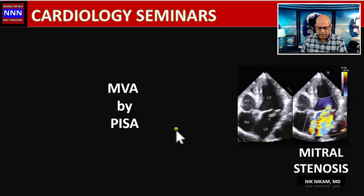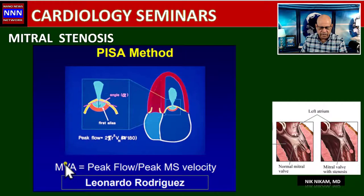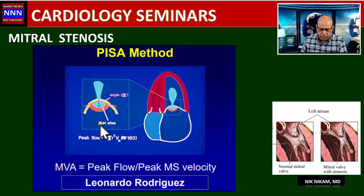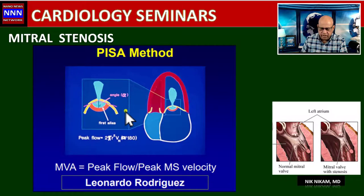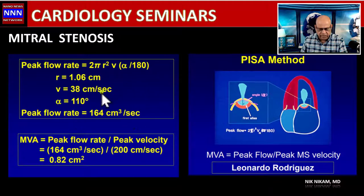Now we look at the mitral valve area by the PISA method — the proximal isovelocity surface area — which is based on peak flow across the mitral valve over peak mitral stenosis velocity. These are interrelated and help calculate the mitral valve orifice. The parameters used include the angle of the leaflets, the first aliasing radius, and the angle, which the computer uses to calculate the mitral valve area.